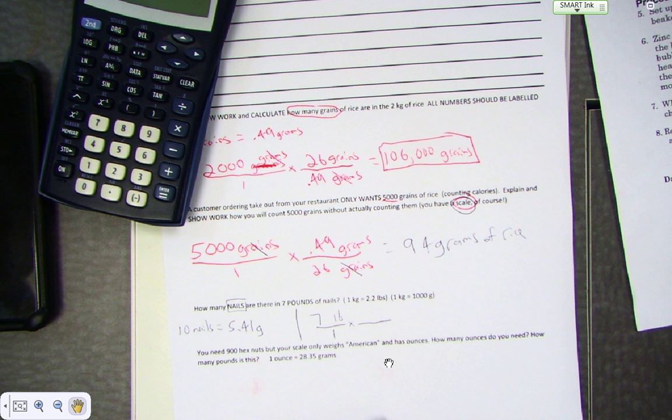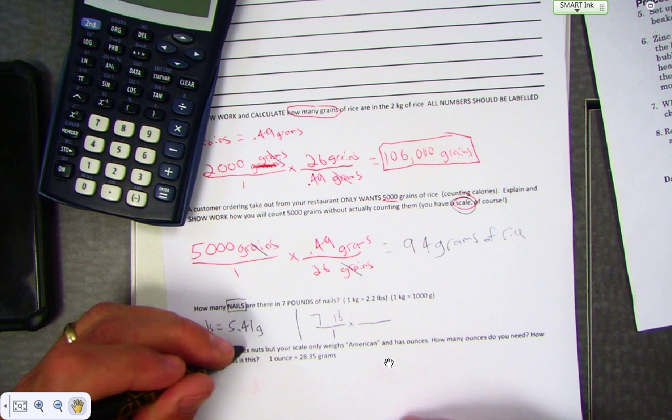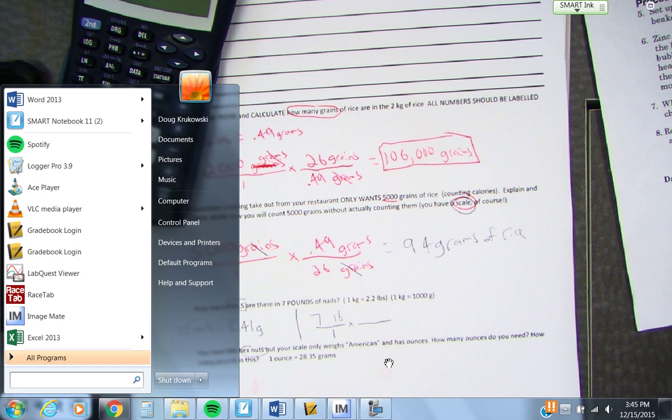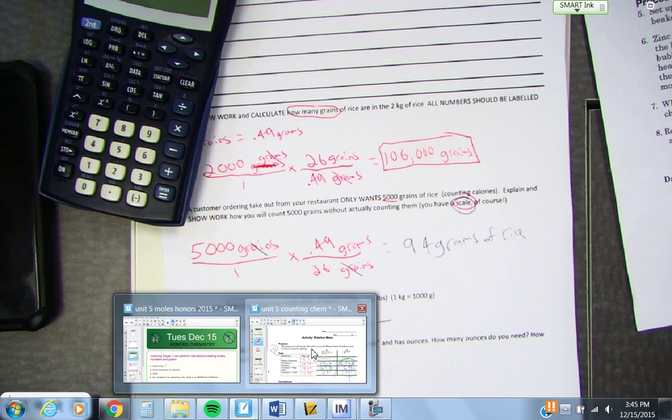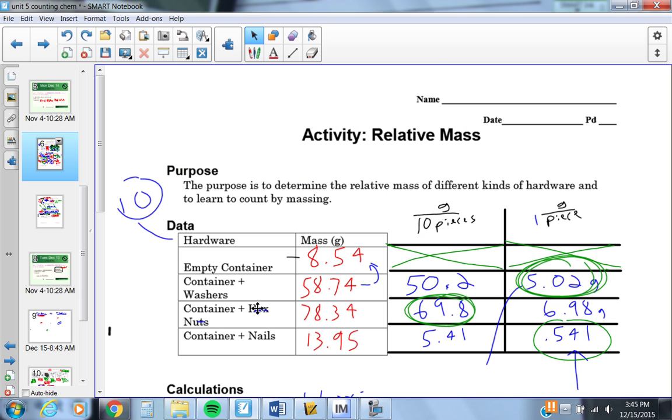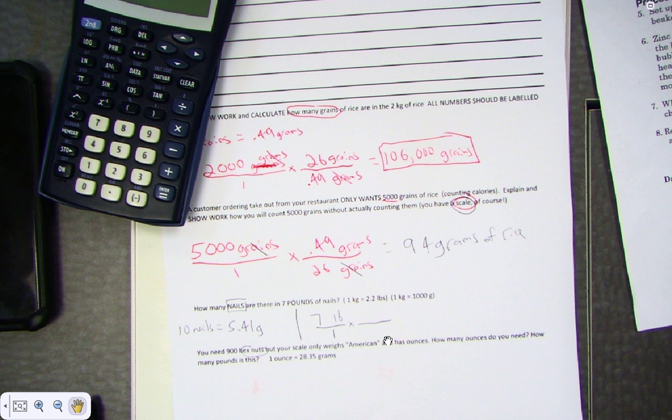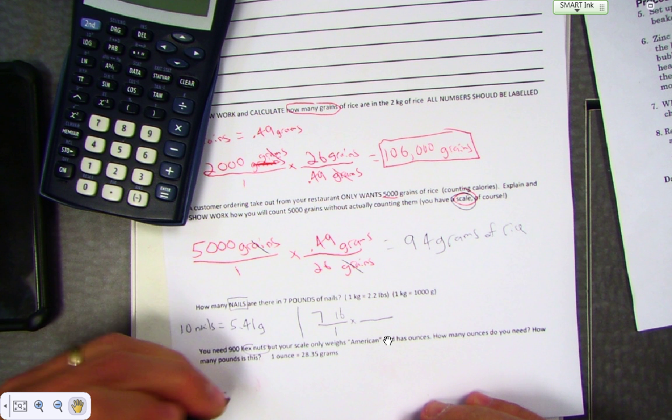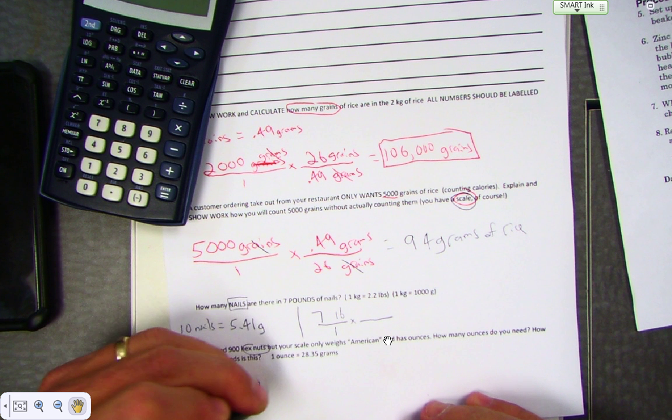Let the units lead and the numbers will follow. The next one's going to ask about hex nuts. Let me remind you when we did our activity: 10 hex nuts weighed 69.8 grams, so I will write 10 nuts equals 69.8 grams.